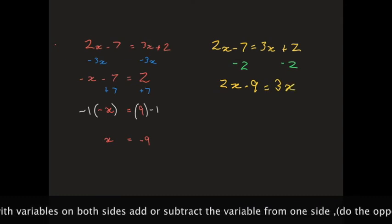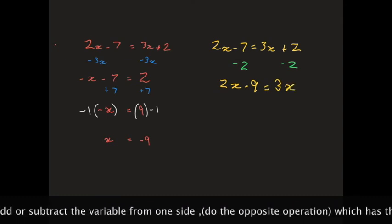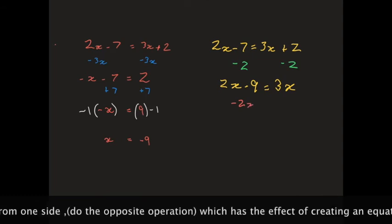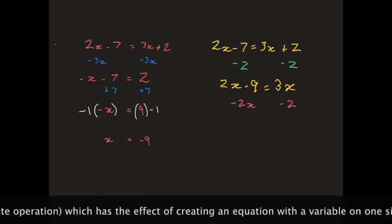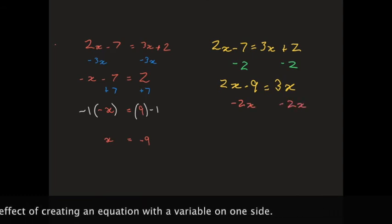Now, I've got 3x, which is more x's on the right. So, I'm going to subtract 2x from the left-hand side and subtract 2x from the right-hand side. On the right-hand side, I end up with x and on the left-hand side, I end up with negative 9.